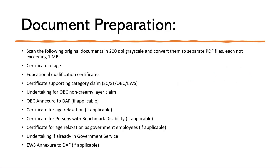The first step is to upload the certificate of age. The commission accepts the date of birth mentioned in your matriculation or equivalent certificates. Please ensure that the date of birth accurately matches that of the certificate that you are uploading. This is very important as it is clearly mentioned that any discrepancies in regards to the date of birth may attract disqualification of the candidate. If your date of birth is not mentioned in your HSC documents or is incompletely mentioned, then you need to upload a certificate from your school's headmaster or principal showing the date of birth or the exact age as recorded in the admission register of the institution.